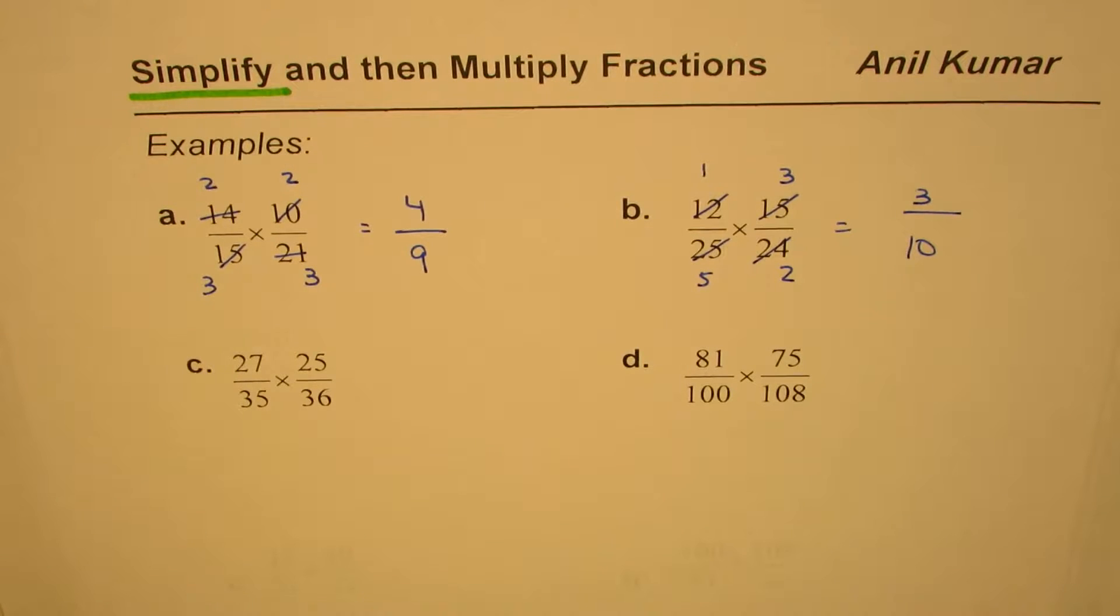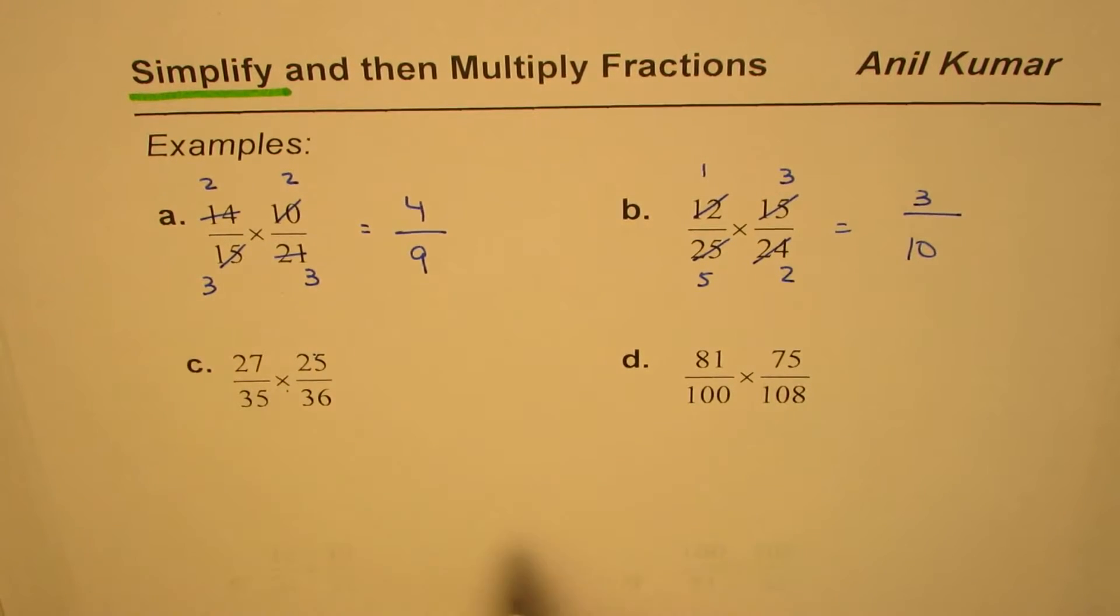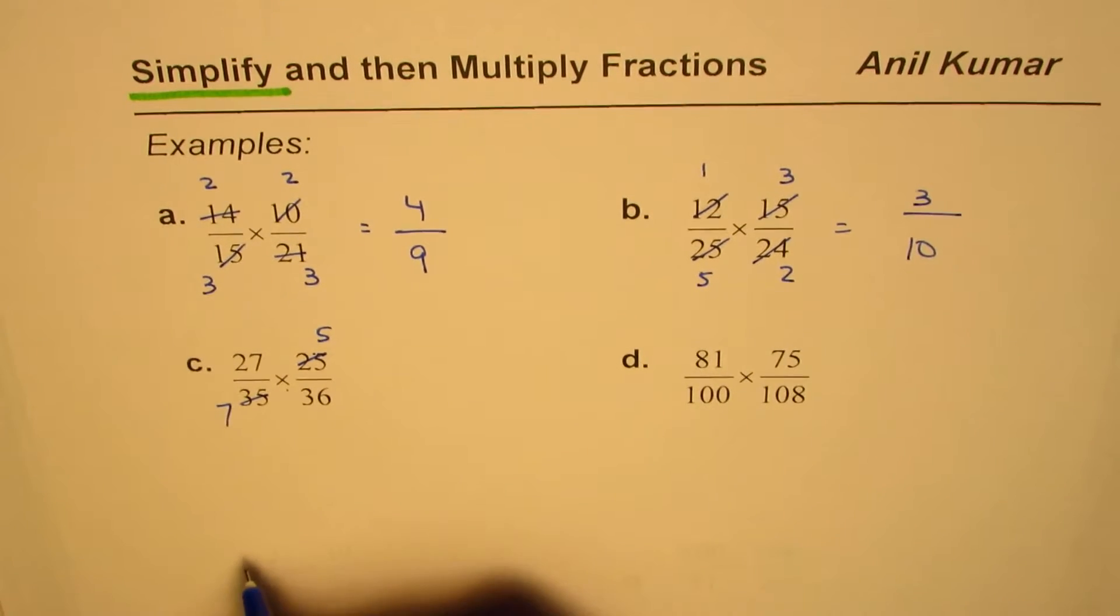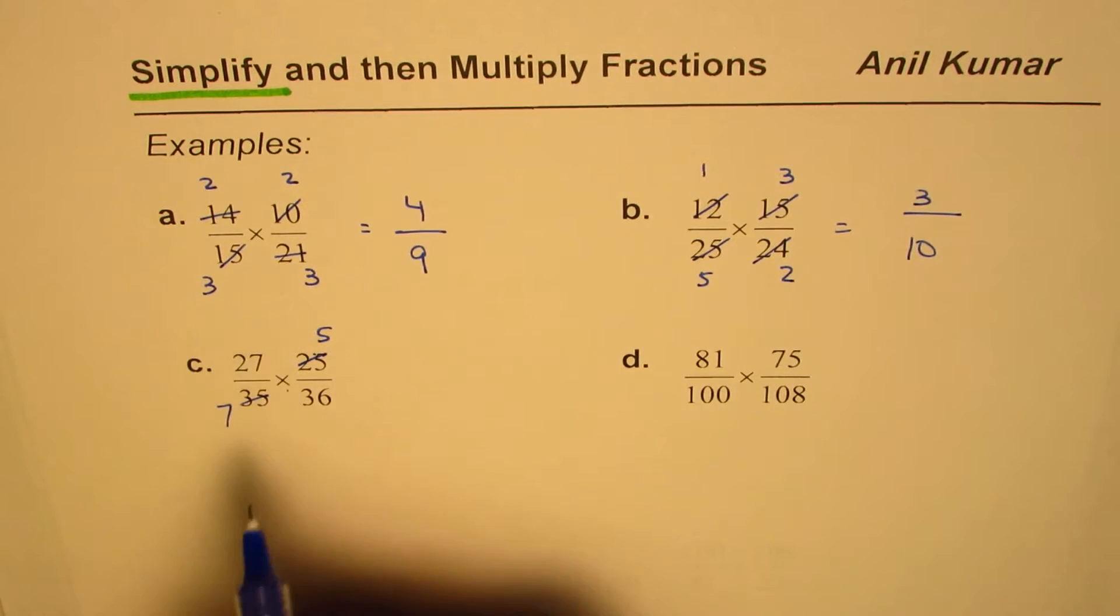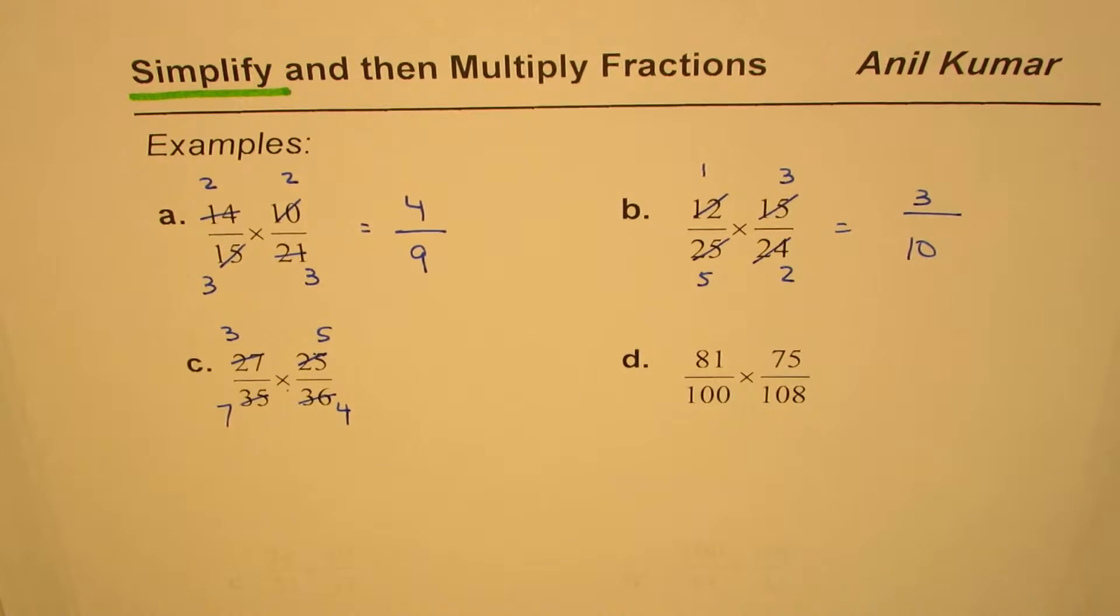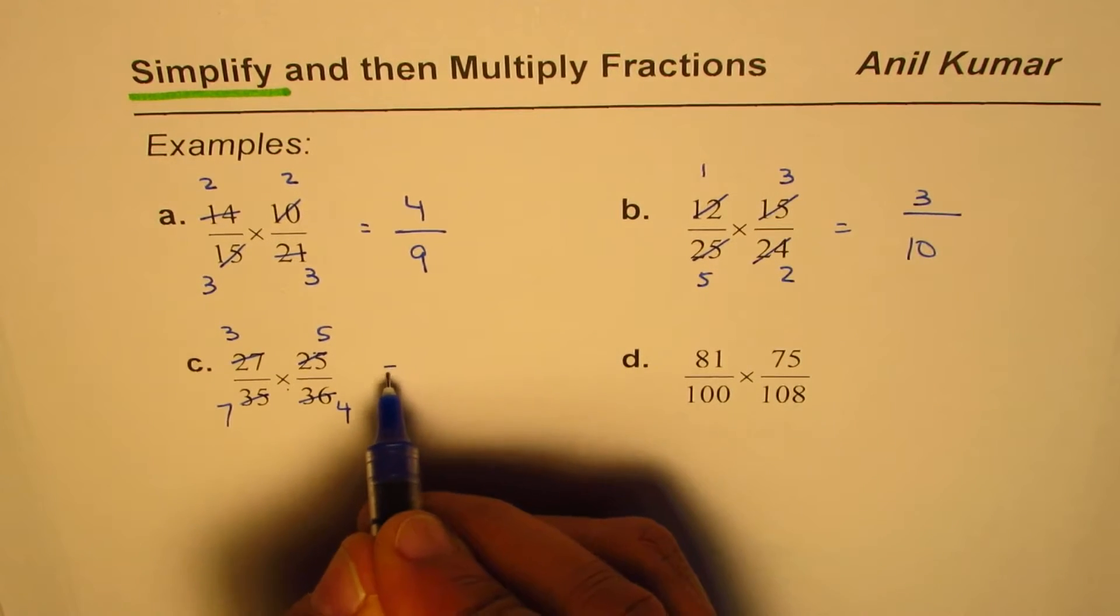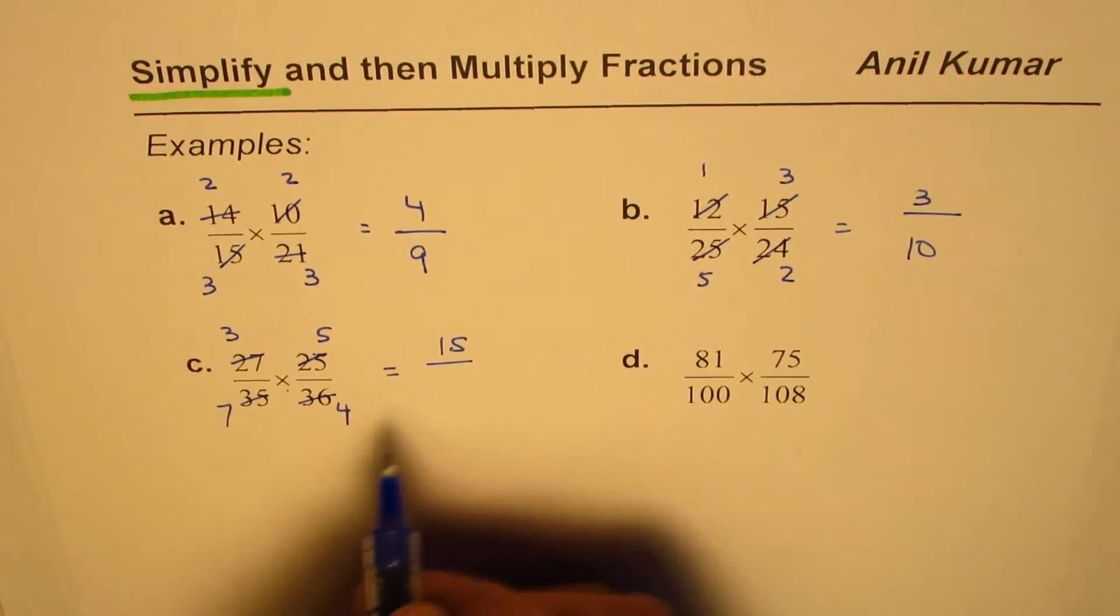27 over 35 times 25 over 36. The 5 ending means that these could be divided by 5: 5 times 5, 5 times 5, 5 times 7. 27 we know can be divided by 9, so 9 times 3 is 27 and 9 times 4 is 36. Now they cannot be reduced further at this stage. Multiply the numerators: 5 times 3 is 15, and the denominators to get the final answer.